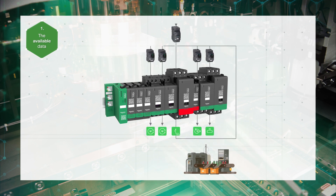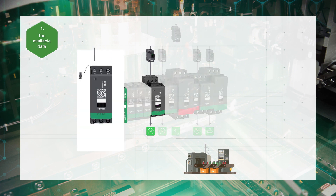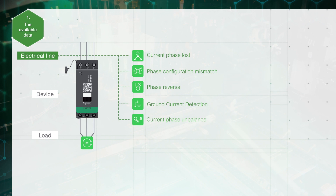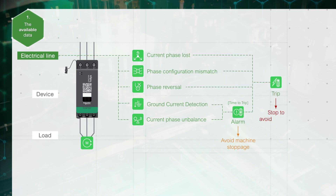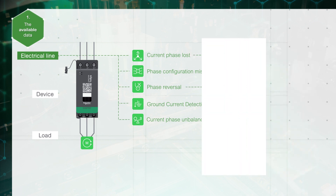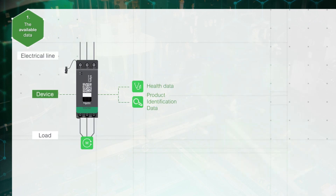Let's focus on this one-direction motor. Tesys Island provides data about the electrical line upstream the device and the load. At the electrical line level, data about the power supply status is available. This data can be used to send an alarm before the trip and protect the load. Users can set their own threshold using SoMove, EcoStruxure Machine Expert, or OMT.